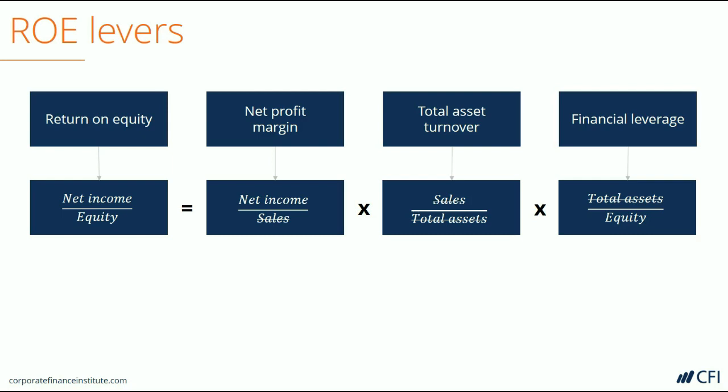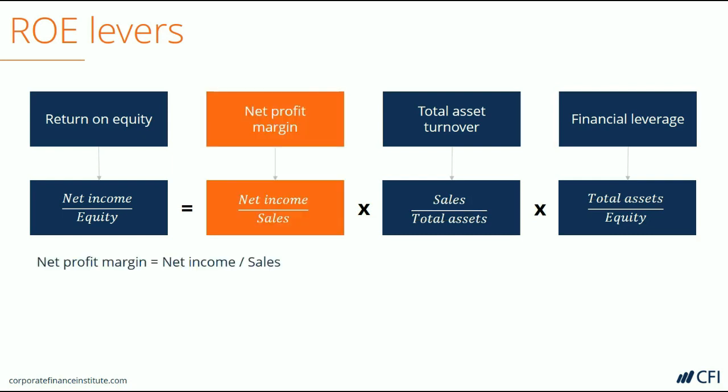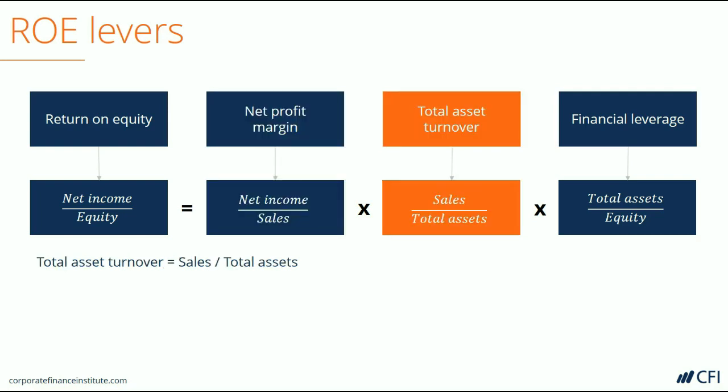Profitability is probably the most obvious lever that anyone would look to. By improving profitability, a company will improve its rate of return for shareholders. Efficiency is another important lever — how well are assets being used to generate sales? If a company has low margins, it may focus on being more efficient with its assets to generate more sales and in turn improve return on equity.